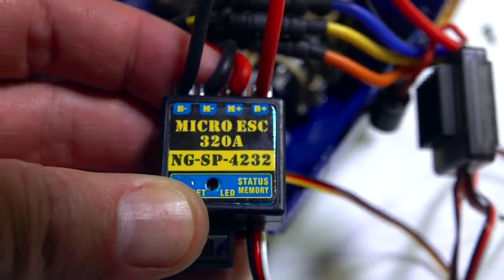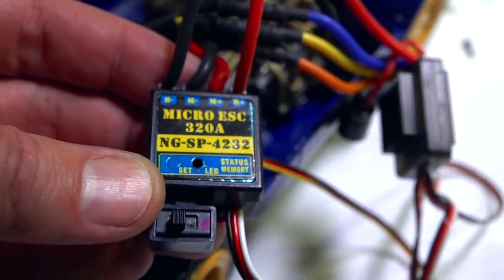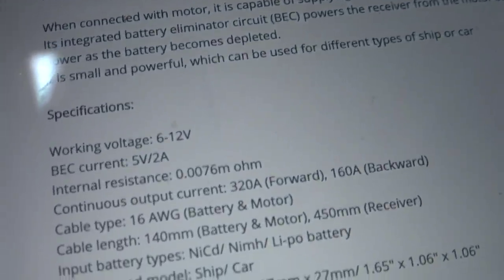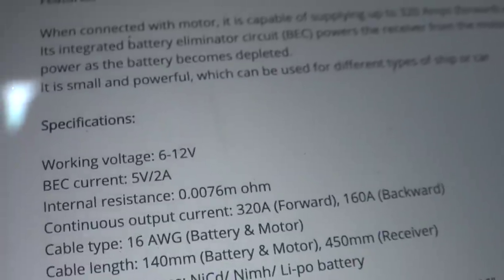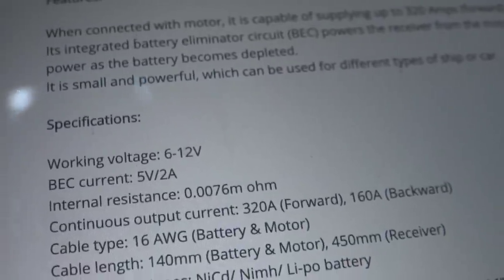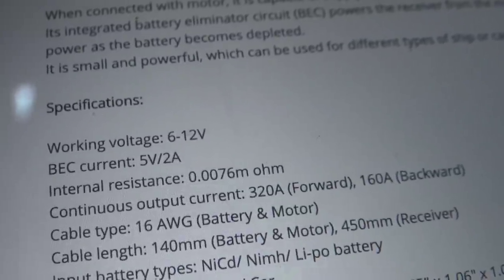Micro ESC 320 amp NGSP 4232. What does the internet say? Okay, let me see, working voltage, up to 12 volts. So it should be able to take a three cell, even though sometimes three cells can be overcharged to almost 13 volts.